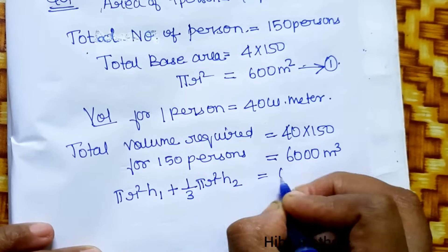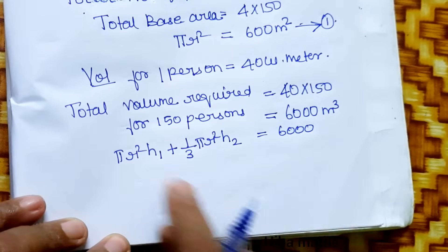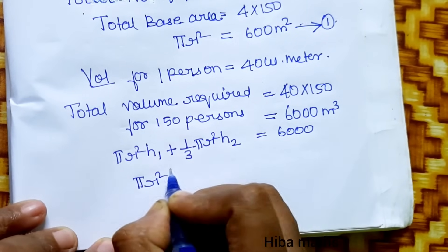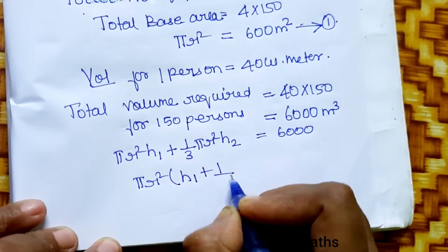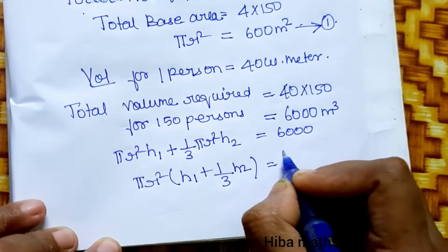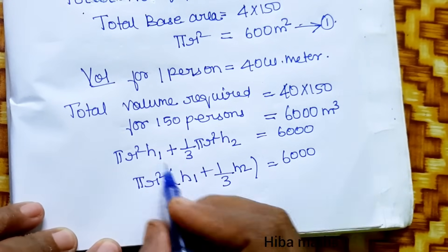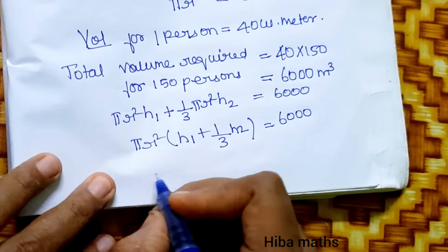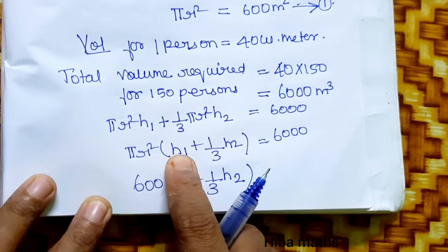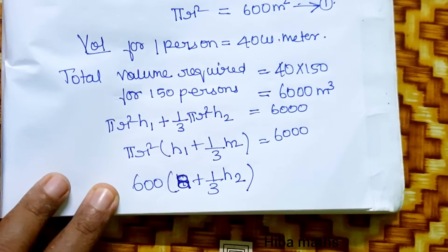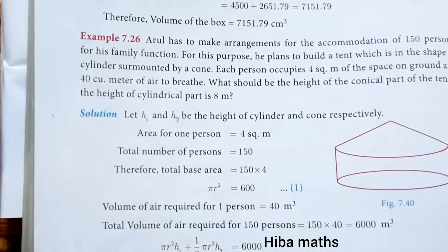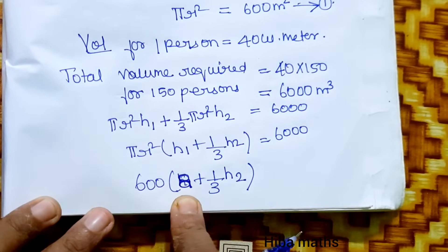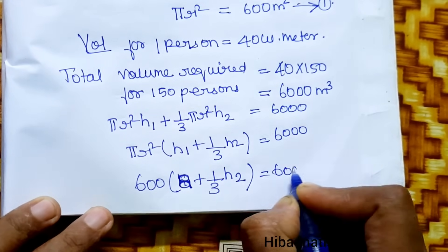The total volume is 6000, so πr²h1 plus (1/3)πr²h2 equals 6000. Since πr² equals 600 and h1 equals 8, we have 600 times 8 plus (1/3) times 600 times h2 equals 6000.